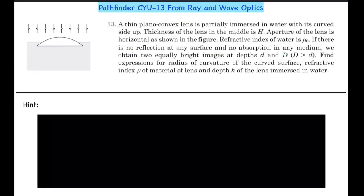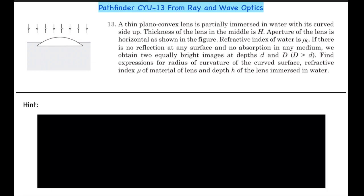Hello guys, here we have question number 13 from the second understanding exercise of the chapter Ray Optics. A thin plano-convex lens is partially immersed in water with its curved side up. Thickness of the lens in the middle is H. Aperture of the lens is horizontal as shown in the figure. Refractive index of the water is mu0. If there is no reflection at any surface and no absorption in any medium, we obtain two equally bright images at depth d and capital D, where capital D is greater than small d. Find the expressions for the radius of curvature of the curved surface, refractive index mu of the material, and depth H of the lens immersed in the water.